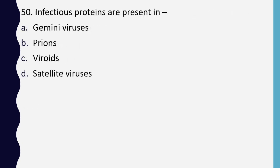Question 50. Infectious proteins are present in: Gemini virus, prions, viroids, or satellite virus. The correct answer is option B: prions.